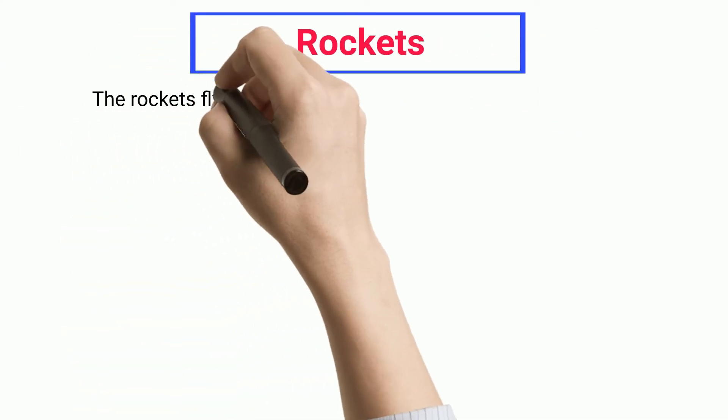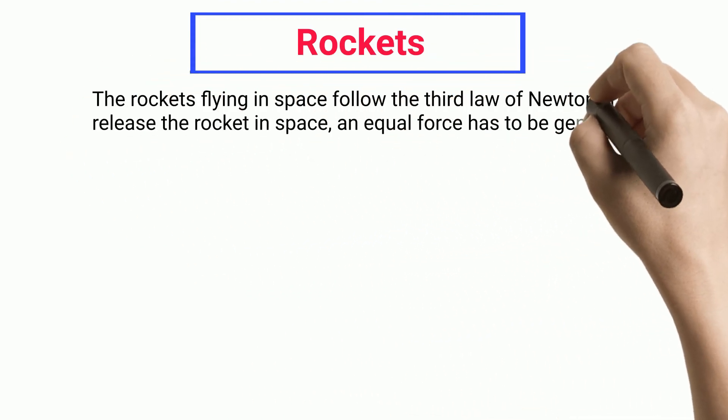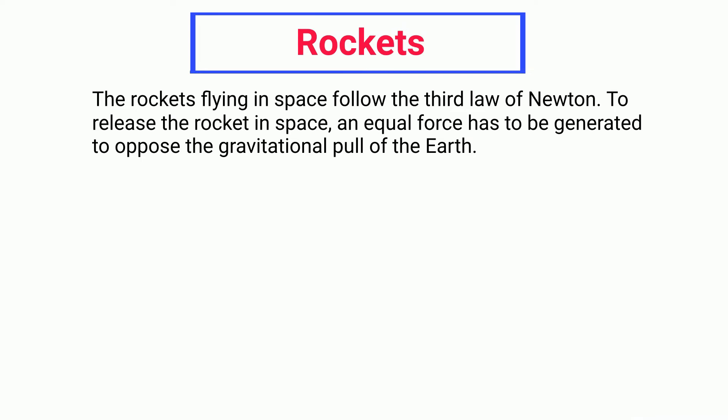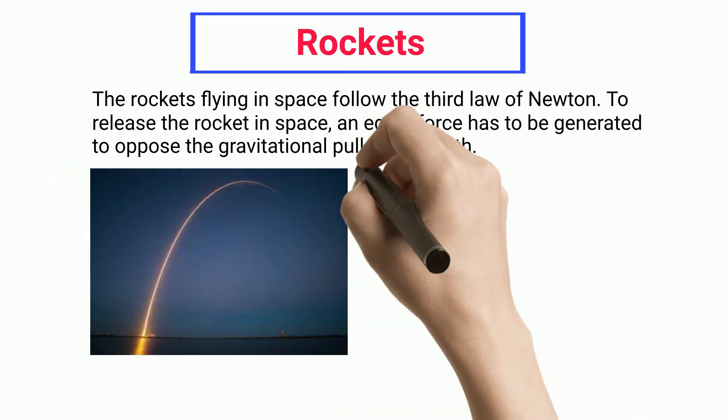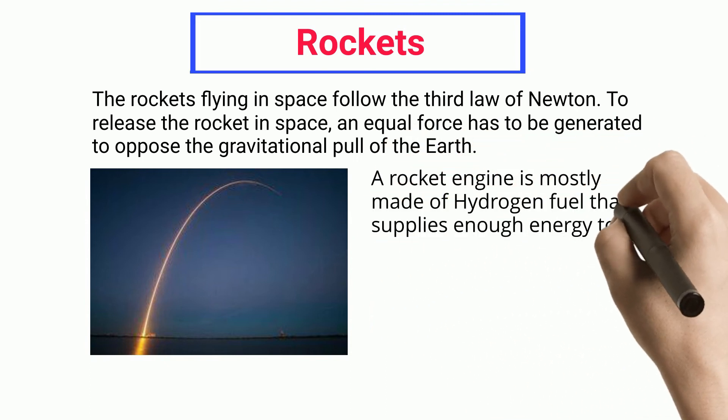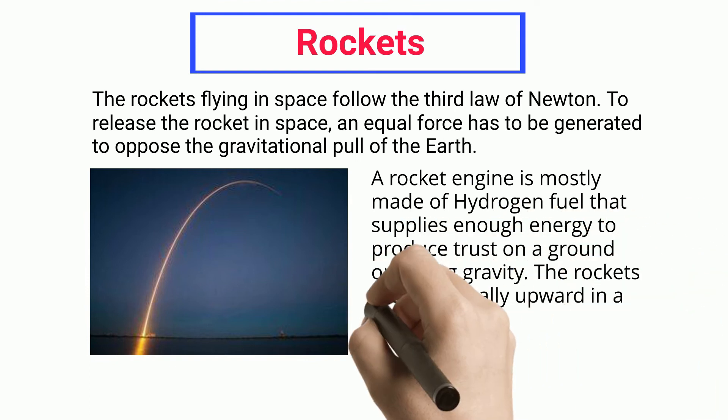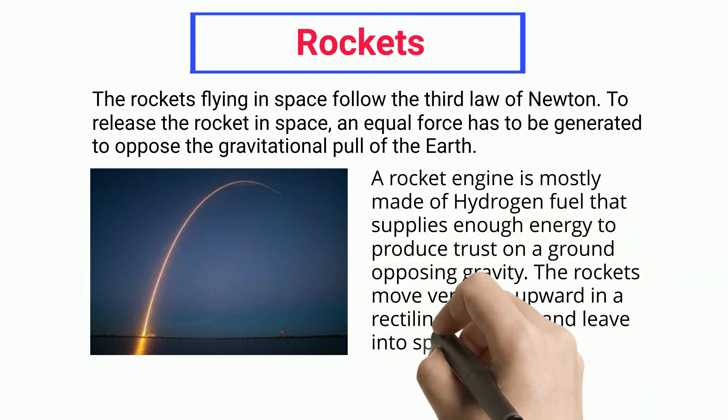Rockets: The rockets flying in space follow the third law of Newton. To release the rocket in space, an equal force has to be generated to oppose the gravitational pull of the earth. A rocket engine is mostly made of hydrogen fuel that supplies enough energy to produce thrust on the ground opposing gravity. The rockets move vertically upward in a rectilinear motion and leave into space.